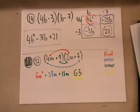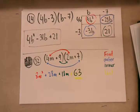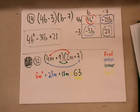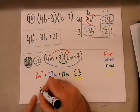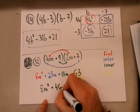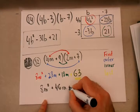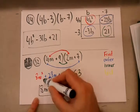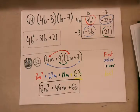The only thing left is to combine like terms and simplify. We have two first degree monomials: 28m and 18m. So the final answer is 8m squared, then 28m plus 18m is 46m, and last but not least, positive 63. That's the answer to number 32, using the FOIL method to multiply two binomials.